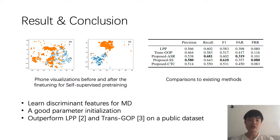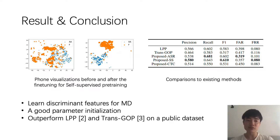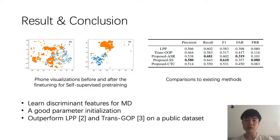Here come the experimental results. First of all, we find that self-supervised learning actually learns discriminative features for mispronunciation detection. We can find that before fine-tuning, even though no labeled data is used at this point,